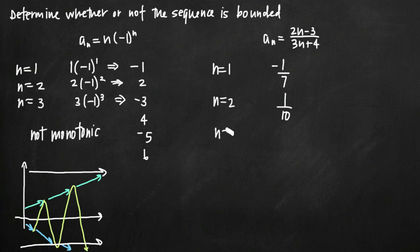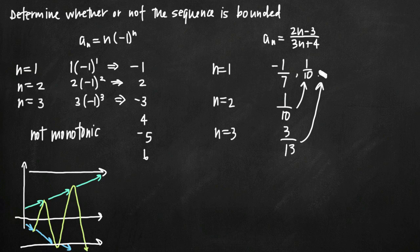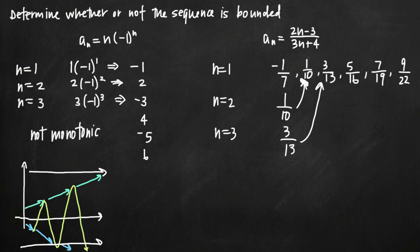Plugging in n equals 3, in the numerator we get 6 minus 3 equals 3, and in the denominator we get 9 plus 4 equals 13, giving us 3 over 13. Continuing, we get 5 over 16, then 7 over 19, then 9 over 22, and so on. Notice that the denominator always increases by 3 and the numerator always increases by 2.